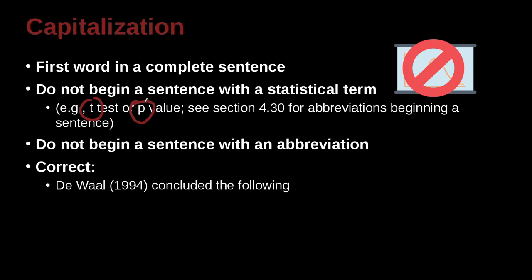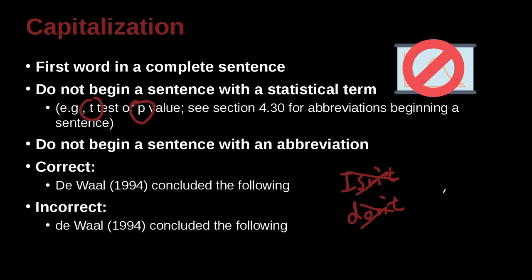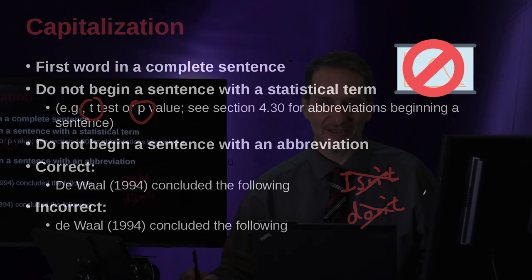Do not begin a sentence with an abbreviation. In your research writing, you should not be using abbreviations in general — things like contractions. Not only do you not begin a sentence this way, but in your research writing, you should not have contractions at all. In your report writing and business writing, you should be formal and write words out: 'is not,' 'do not.' Do not abbreviate them. You should not write 'don't'; you should write 'do not.'